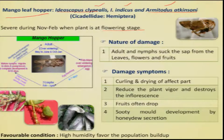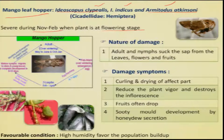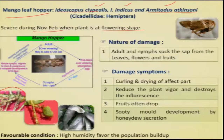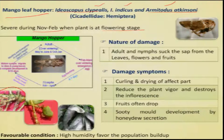Once the trees start flowering, especially during November to February, the population will shift to the inflorescence and start causing damage. Both the nymphs and the adults are the damaging stage, congregating along the inflorescence and sucking the sap. As a result, very poor fruit setting is noticed, and if the infestation continues, the developing fruits are also attacked, resulting in fruit drop.